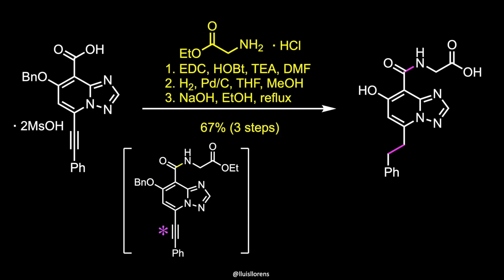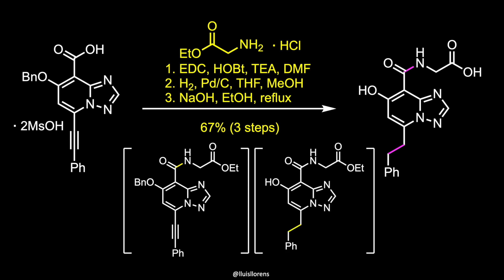Reduction of the alkyne and removal of the benzyl-protecting group liberated the phenol. Subsequent hydrolysis gave enarodustat as the free carboxylic acid in 67% yield over three steps.